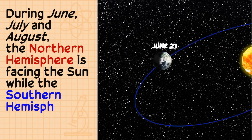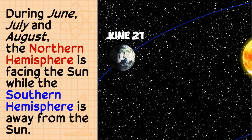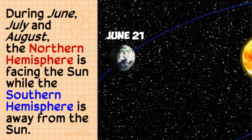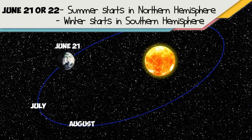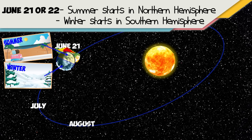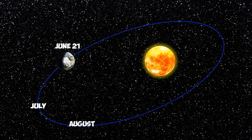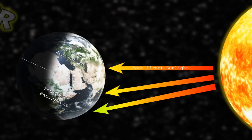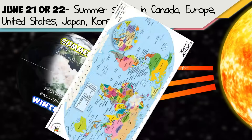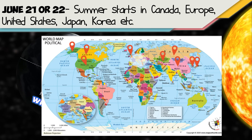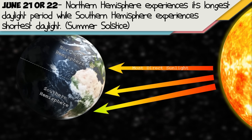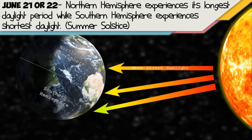During June, July, and August, the northern hemisphere is facing the Sun while the southern hemisphere is away from the Sun. On June 21 or 22, summer begins in the northern hemisphere while the southern hemisphere experiences winter. The northern hemisphere is exposed to more direct sunlight, which is why they experience summer. Examples of these countries are Canada, Europe, and the United States. The northern hemisphere also experiences its longest daylight period during this time.